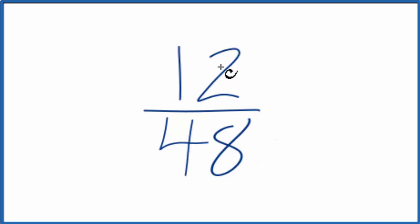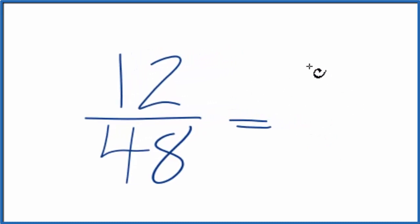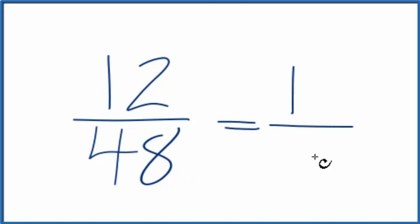so I could just divide the numerator and the denominator by 12. 12 divided by 12 gives us 1, and then 48 divided by 12 gives us 4, because 4 times 12 is 48.